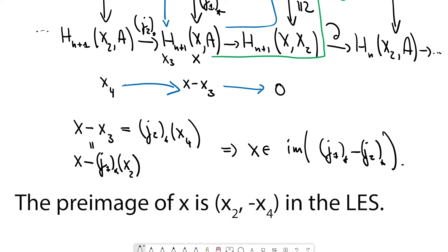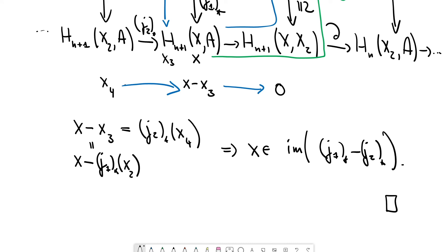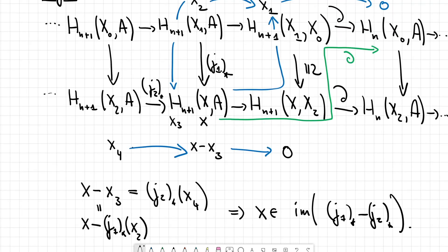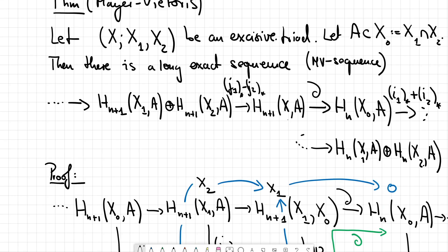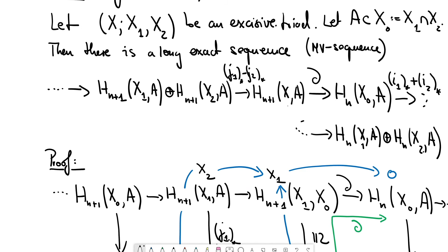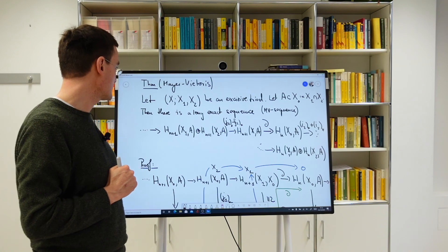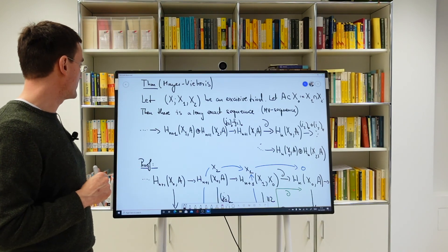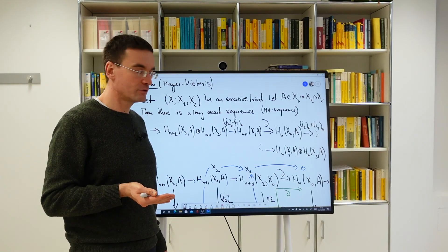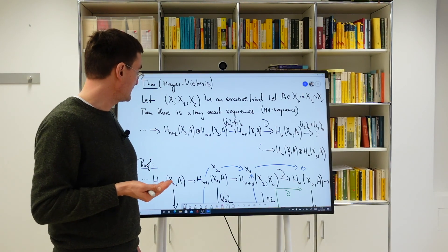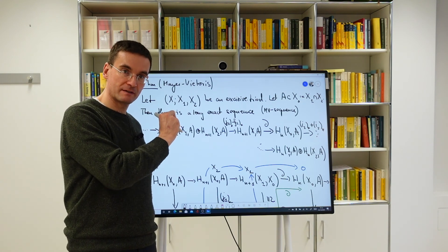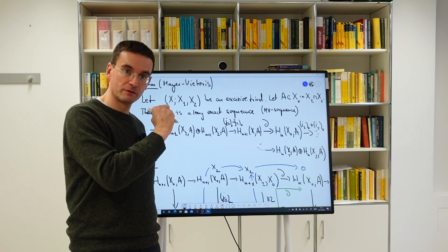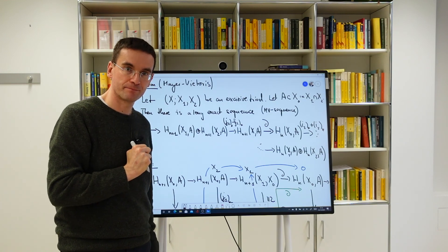This proves the Mayer-Vietoris sequence. The most important situation where we apply this is where A is the empty set, so we have just absolute homologies in the long exact sequence. Especially in the case where X1 and X2 are open subsets whose union is X, we can compute the absolute homology of X from the absolute homologies of X1 and X2 — the potentially simpler pieces.